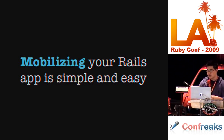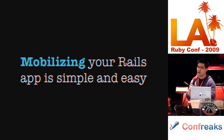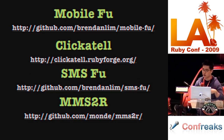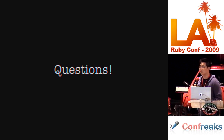So, mobilizing a Rails app is really simple — there are a lot of tools out there and I only skimmed through a couple of them. There's also Rails IUI that you can use with MobileFu to create a custom iPhone-style Rails app interface. Here's where you grab everything: MobileFu, Clickatell, SMS Foo, and MMS2R. Fork them, mess with them, make them better. I've got a lot of time remaining — does anyone have questions?